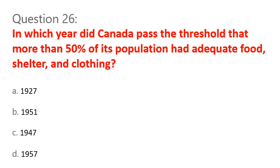Question 26. In which year did Canada pass the threshold that more than 50% of its population had adequate food, shelter, and clothing? A. 1927. B. 1951. C. 1947. D. 1957. Correct answer: B. 1951.